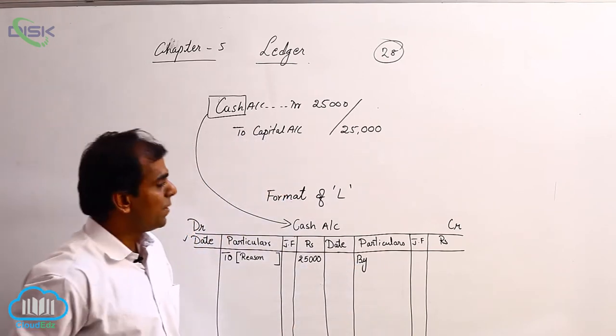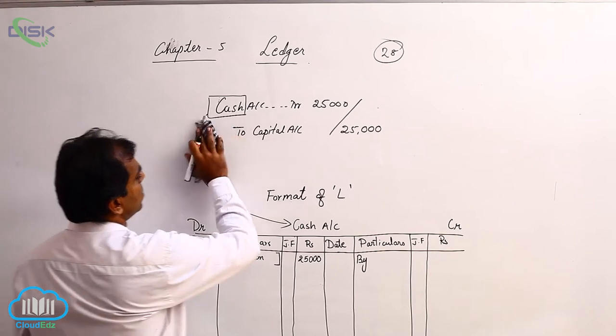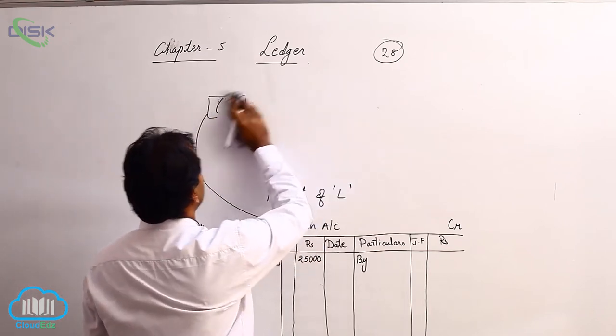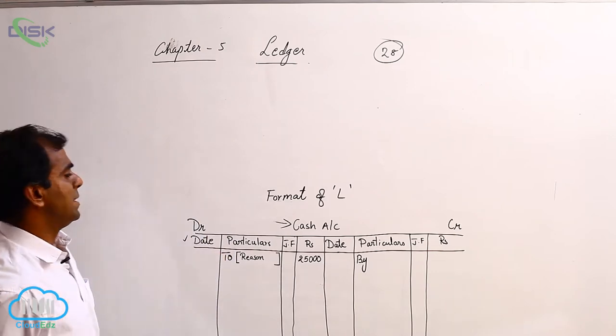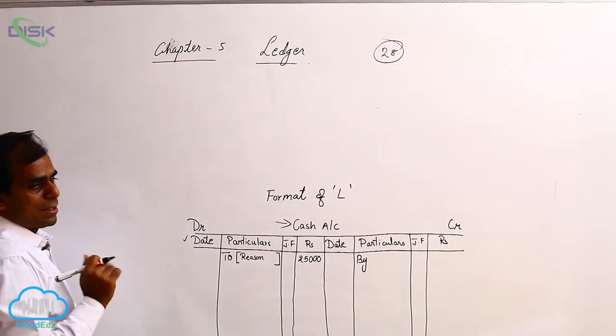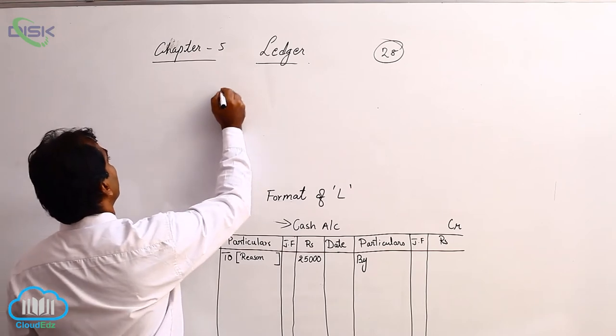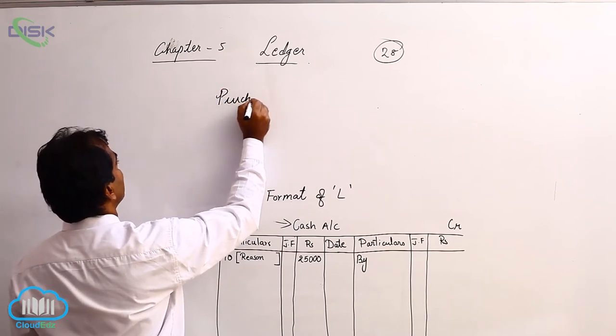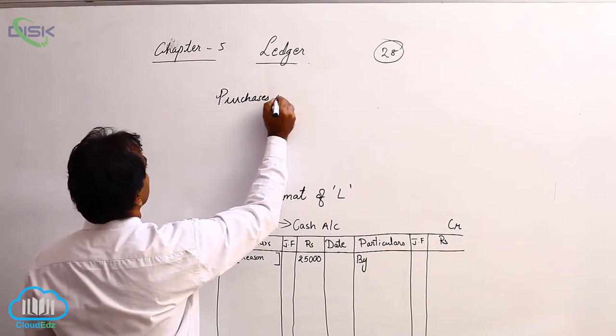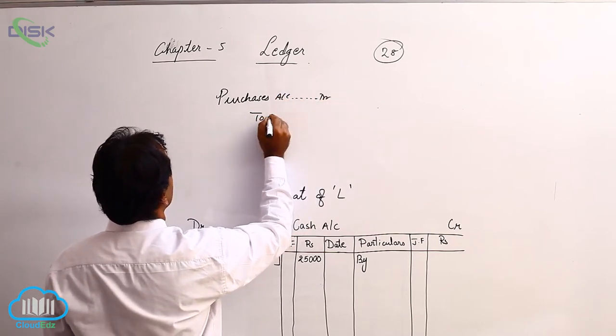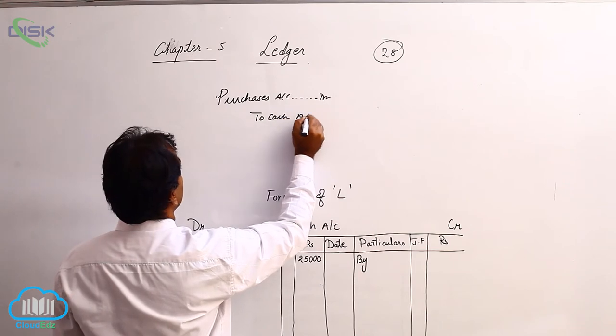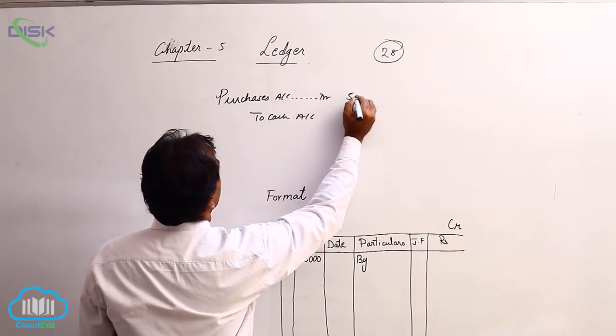I will take one more journal entry to show how we post it on the credit side. I will take a cash transaction in which cash is to be credited. Let us say, we have a journal entry, purchases account debit to cash, 500.